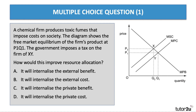So here's our first question. A chemical firm produces toxic fumes that impose costs on society — external costs. The diagram shows the free market equilibrium of the firm's product at price P1, output Q1. The government then imposes a tax on the firm equal to XY. The question is: how would this improve resource allocation? Press the pause button and have a go at this question.